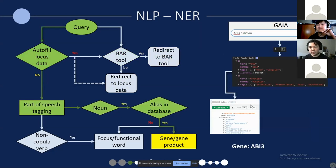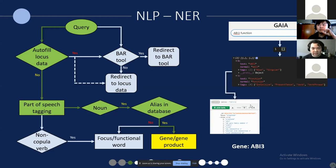When it comes to actually answering questions — say the question is "what is the function of ABI3" or "ABI3 function" — we use an NLP library called Compromise, which allows us to do part-of-speech tagging and break down a sentence to determine what each word is: whether a word is a noun or a verb. Most genes or gene products are nouns, as there is no scientific corpus to understand what each word is. So we look at those nouns and compare them against a database of aliases.